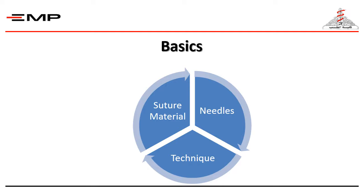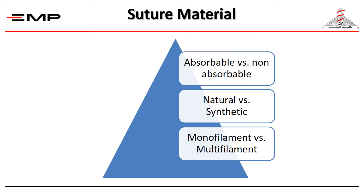Skillful wound closure requires not only knowledge of proper surgical techniques, but also knowledge of the physical characteristics and properties of suture materials and needles. There is a wide variety in suture materials. Suture materials can be absorbable or non-absorbable, natural or synthetic, monofilament or multifilament. Absorbable sutures are used in sites where stitch removal is impossible, for example in the subcutaneous tissue. Non-absorbable sutures are used when stitch removal is possible, like stitching the skin.